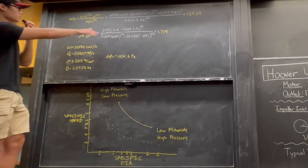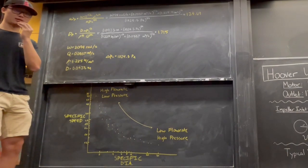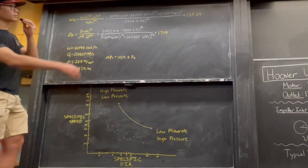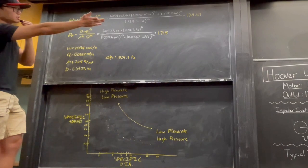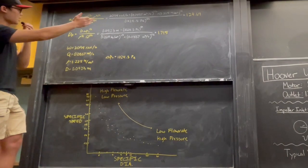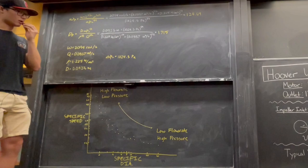Using the formulas for non-dimensional specific speed and diameter, we get that the specific speed of our pump is 124.69 and our specific diameter is 1.715.